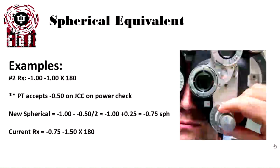Let's look at another example. In this case, that's a minus 1, minus 1 at 180. This time the patient accepts a half diopter more on the JCC with a power check. Their new sphere power is plus a quarter diopter. So our new sphere power is minus 0.75 sphere. The current Rx within the phoropter then becomes minus 0.75, minus 1.50 at 180.